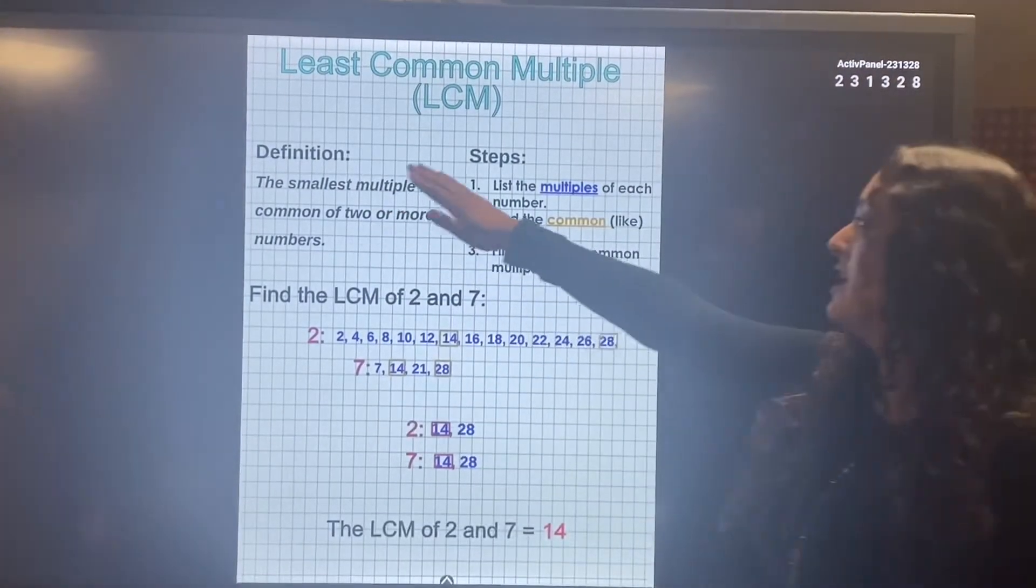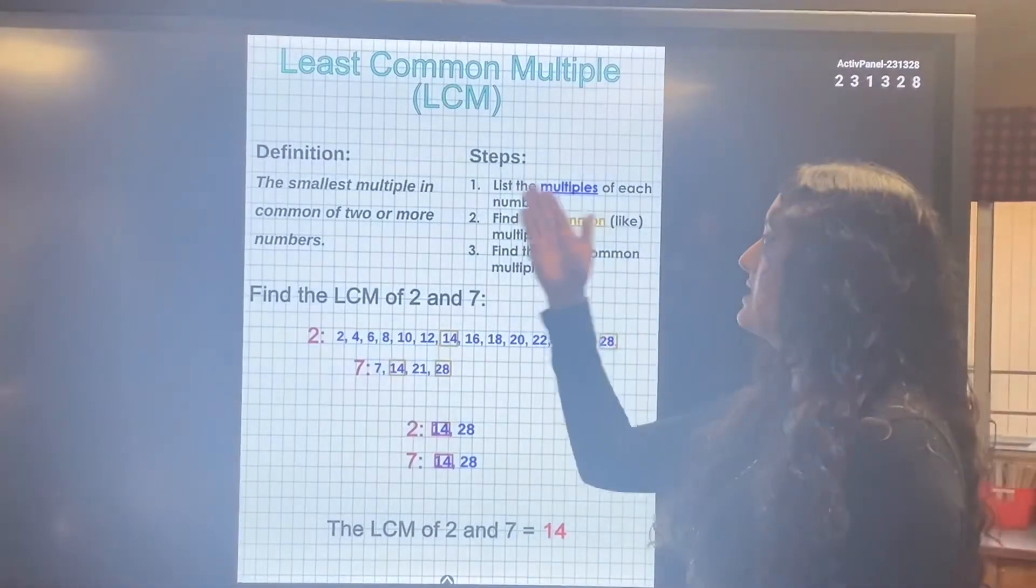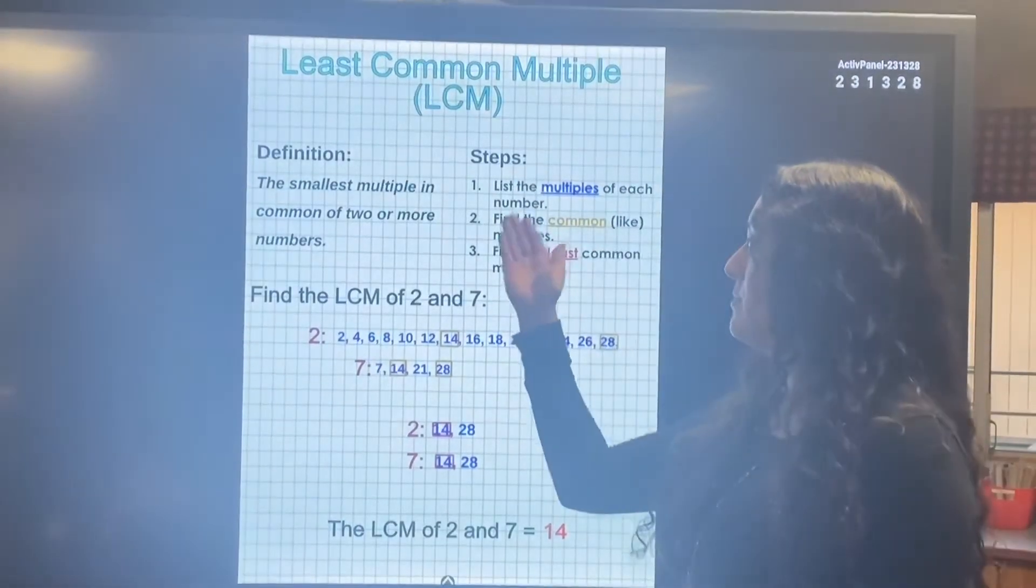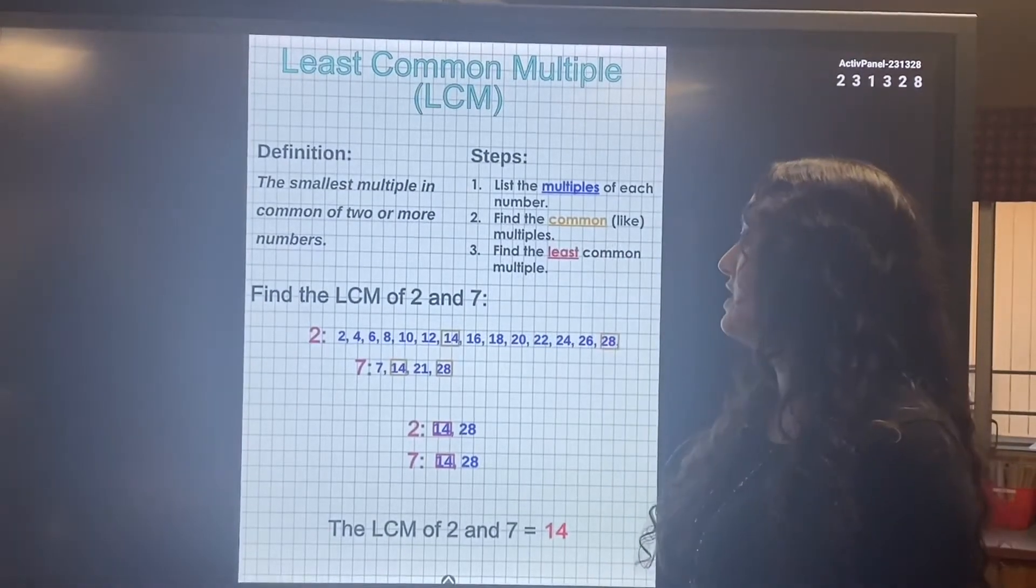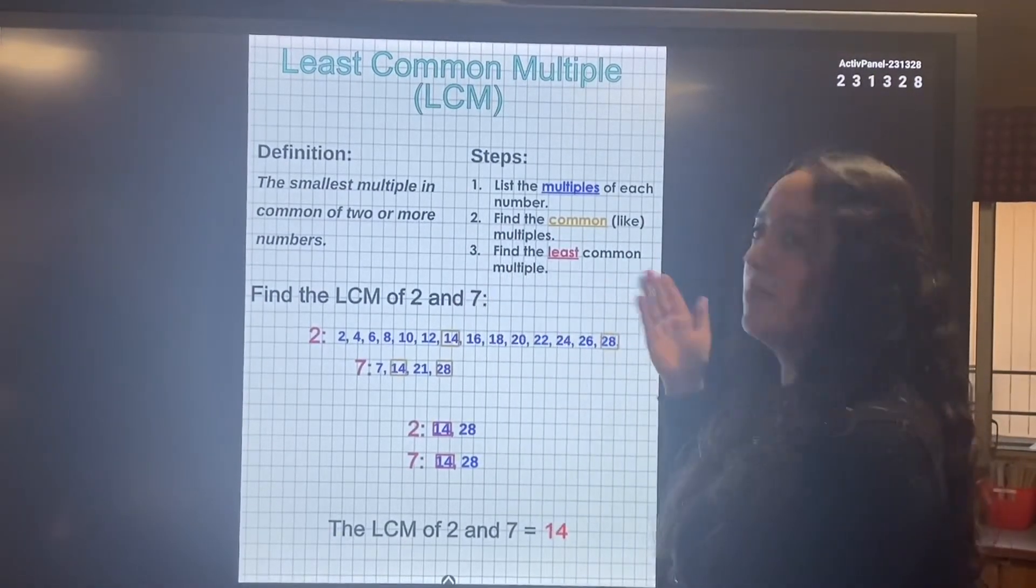So here's the steps. The first step is to list the multiples of each number. Number two, find the common like multiples. Number three, find the least common multiple.